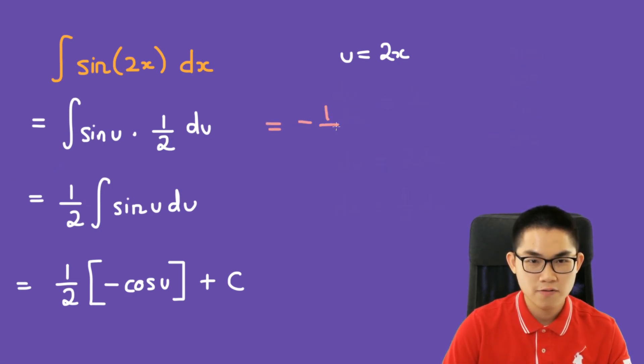We get negative 1 over 2 times cos of 2x plus c.